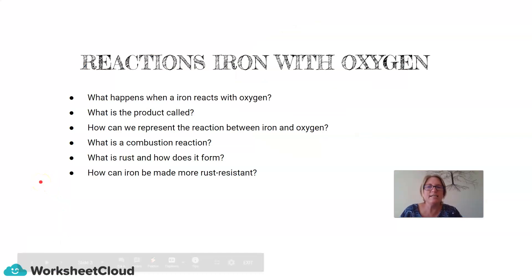So, in our lesson today, we're going to have a look at how iron reacts with oxygen. So, we're going to see what happens. What is the product called? How do we represent the reaction between iron and oxygen? What is a combustion reaction? How is rust, and how does it form? And how can iron be made more rust resistant?